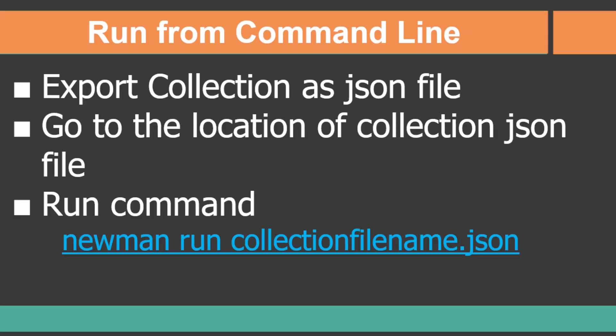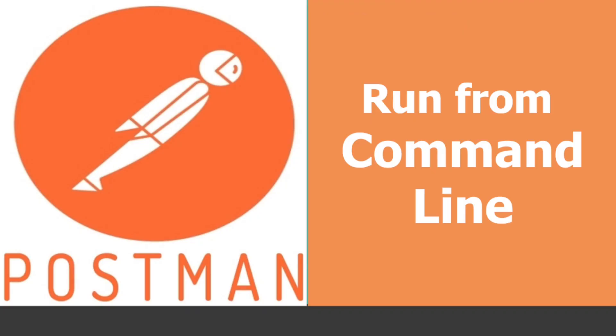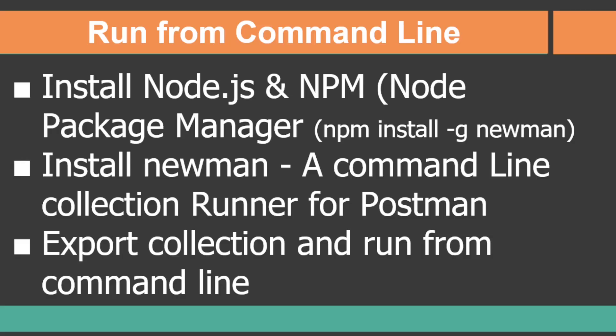Once you export the collection as a JSON file — basically from Postman you need to export the collection where you have all the scripts written — you need to export that entire collection as a JSON file, then go to the location of that JSON file and run the command in the command line. I am going to teach you step by step: how to install Node.js, how to install NPM, how to install Newman, and then how to run the scripts from the command line.